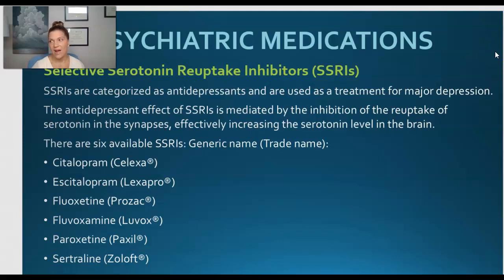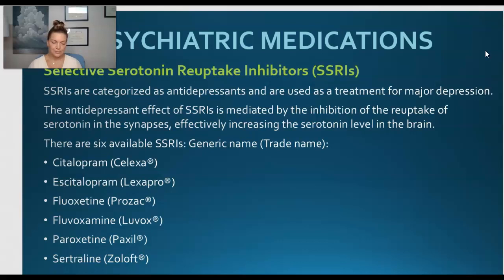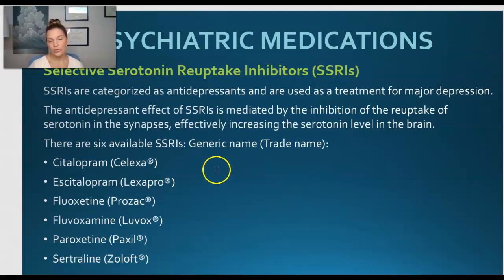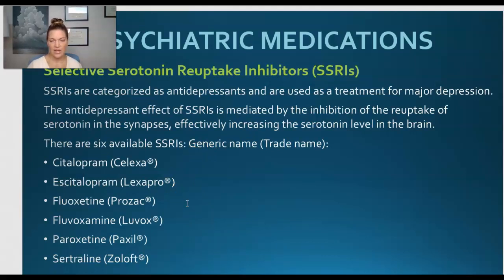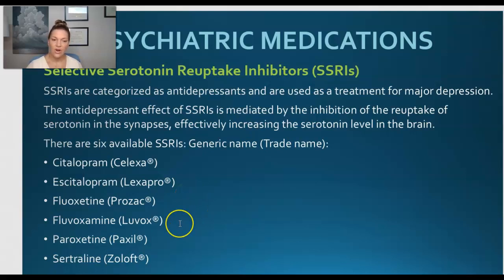Moving along to the SSRIs, or Selective Serotonin Reuptake Inhibitors. These medications are used to treat major depression. The antidepressant effect of SSRIs is mediated by the inhibition of the reuptake of serotonin in the synapse of the nerve, effectively helping to increase serotonin levels in the brain. These are more commonly prescribed now than the MAOIs. We have citalopram or Celexa, escitalopram or Lexapro, fluoxetine or Prozac, fluvoxamine or Luvox, paroxetine or Paxil, and sertraline or Zoloft.